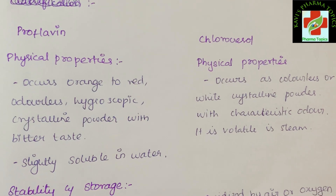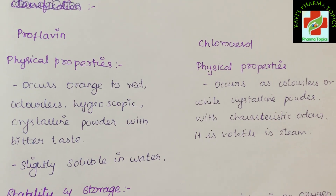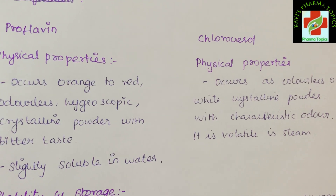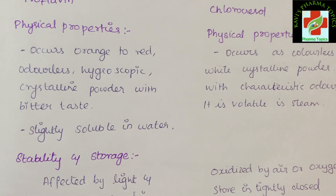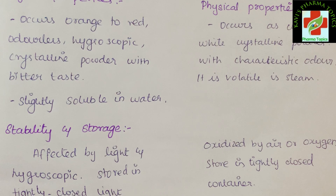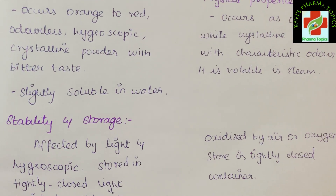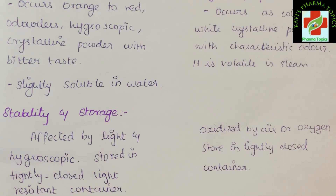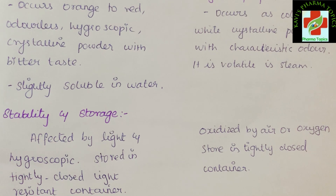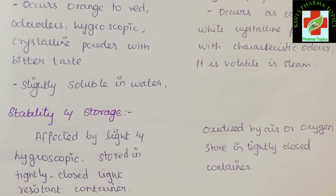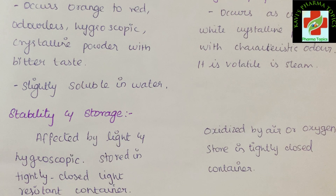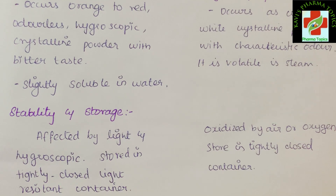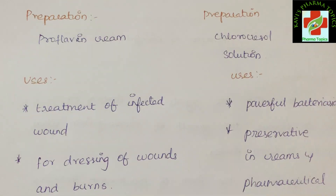For the physical properties of chlorocresol: it is a colorless or white crystalline powder with a characteristic odor. It is volatile in steam and soluble in hot water. For stability and storage: proflavine is affected by light and is hygroscopic. It is stored in a tightly closed, light-resistant container. It is also oxidized by air.